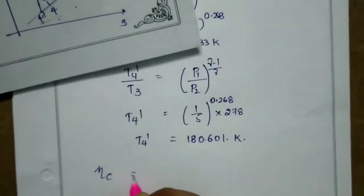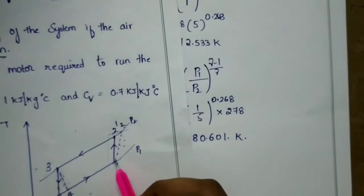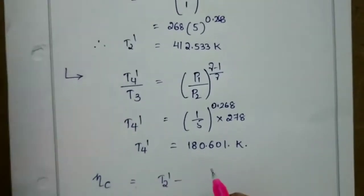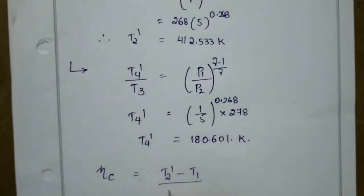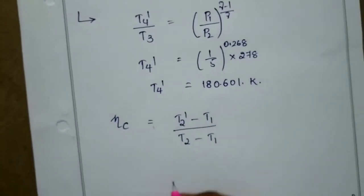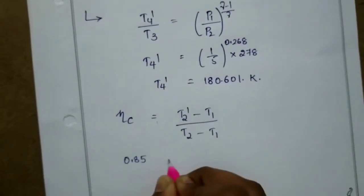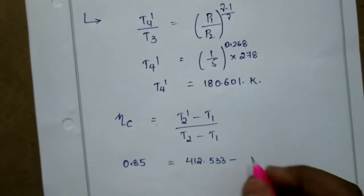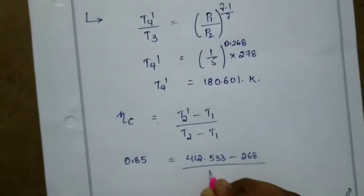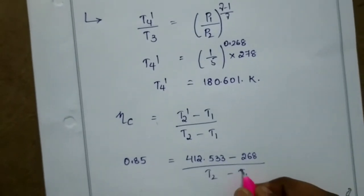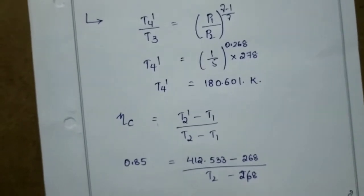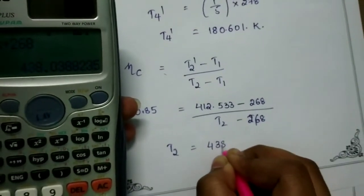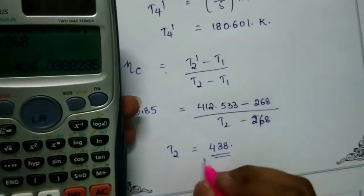Now using the efficiency of the compressor, efficiency is equal to T2 dash minus T1 by T2 minus T1. The efficiency of the compressor is 0.85. So 0.85 equals 412.533 minus 268 divided by T2 minus 268. By calculation, T2 is equal to 438 Kelvin.